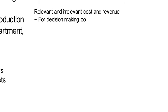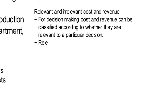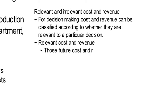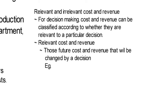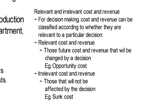For decision making, costs and revenues can be classified according to whether they are relevant to a particular decision. Relevant costs and revenues are those future costs and revenues that will be changed by a decision — for example, opportunity cost and marginal cost. Irrelevant costs and revenues are those that will not be affected by the decision — for example, sunk cost.